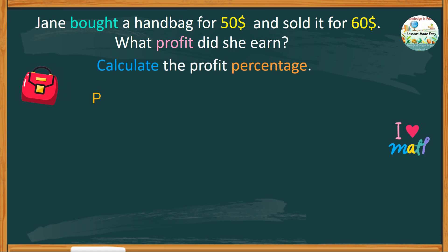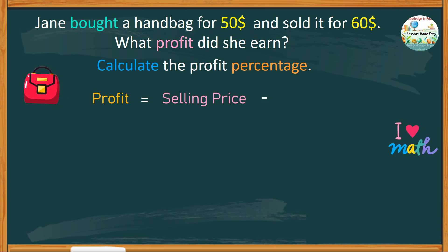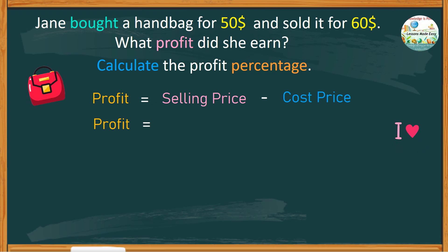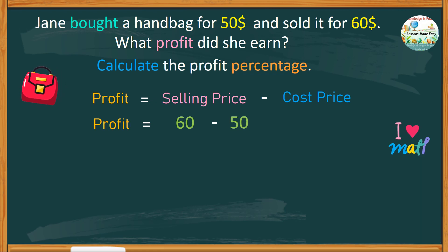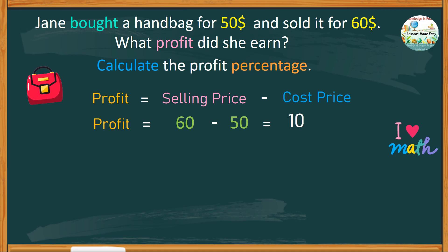To find the profit, take the selling price minus the cost price. The selling price is $60 minus the cost price, which is $50, so the profit is $10.